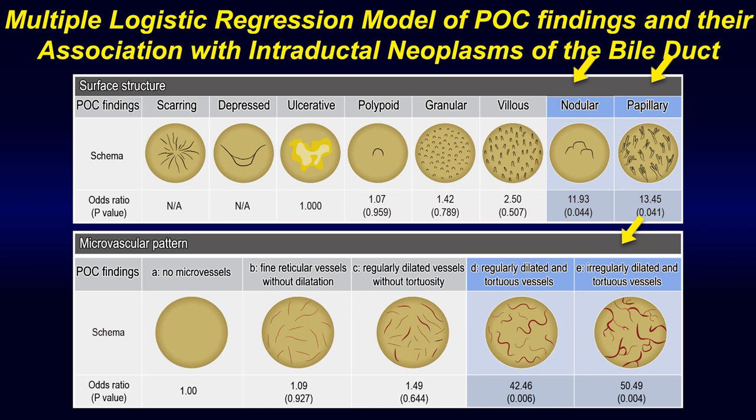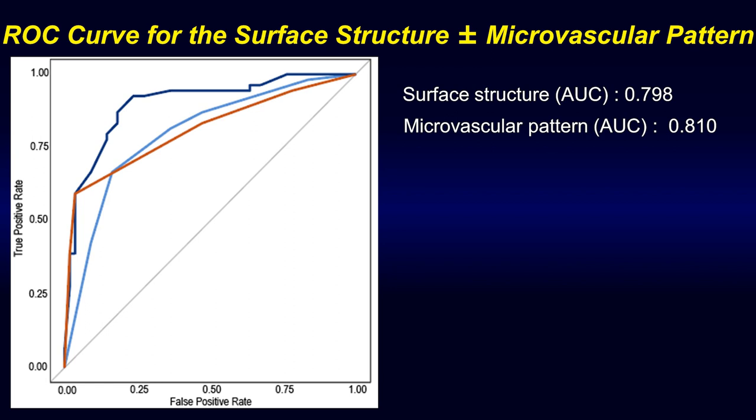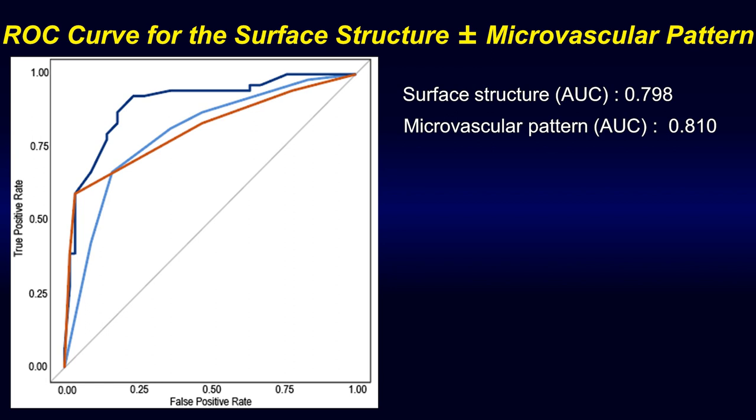Papillary, nodular, and irregularly or regularly dilated and tortuous vessels were findings associated with intraductal neoplasms. The area under the receiver operating characteristic curve of the novel classification system was 0.899.